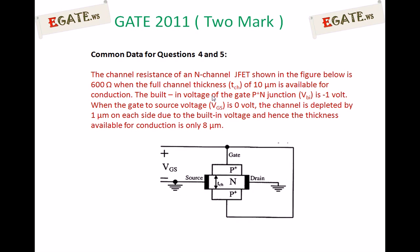The channel resistance for an n-channel JFET shown below is 600 ohms when the full channel thickness of 10 µm is available for conduction. The built-in voltage for the gate P-plus N junction is minus 1 volt. When the gate-to-source voltage is 0 volts, the channel is depleted by 1 µm on each side due to the built-in voltage, and hence the thickness available for conduction is only 8 µm.